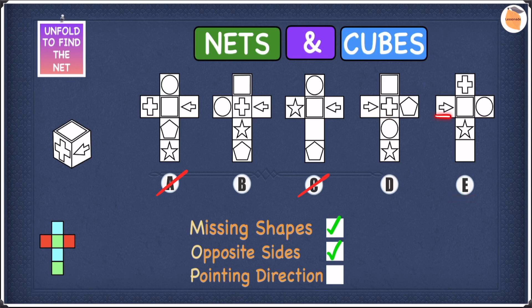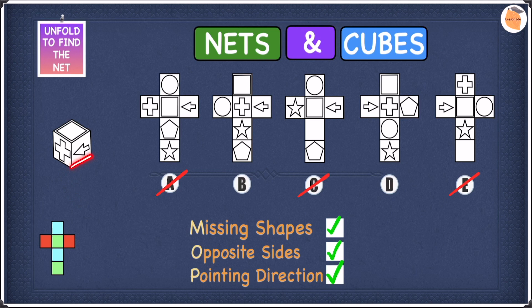In E, however, the arrow is pointing towards the square, even though it's meant to point towards the plus sign. Because it's pointing at the wrong shape, we can cross off E. We're still left with B and D. Looking at the cube, the arrow is towards the right-hand side of the plus. But in D, the arrow is towards the left-hand side of the plus — if you fold this cube, the arrow would be towards the left-hand side, even though it's meant to be towards the right-hand side. Because it's in the wrong direction, we can cross off D, and now we're left with B.